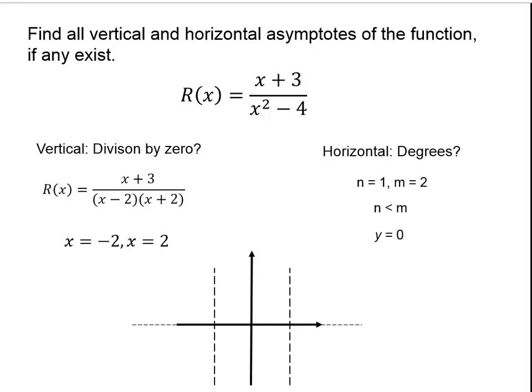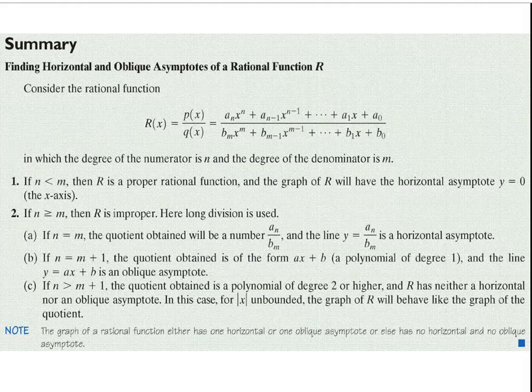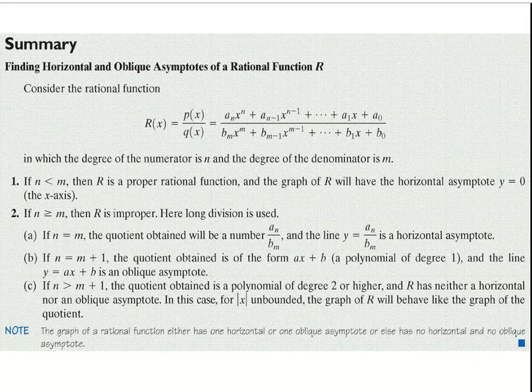That's the main idea in section 5.2. In 5.3, we're going to put this together with some other new information and sketch a really nice detailed graph of rational functions. The book gives a nice summary of how to find horizontal and vertical asymptotes. If you have any questions, please post on the discussion board, and I'll see you in the next video.